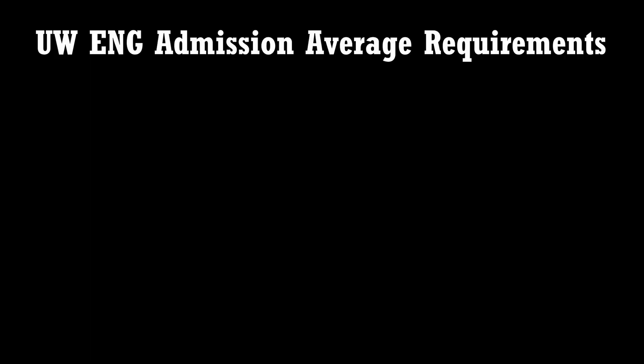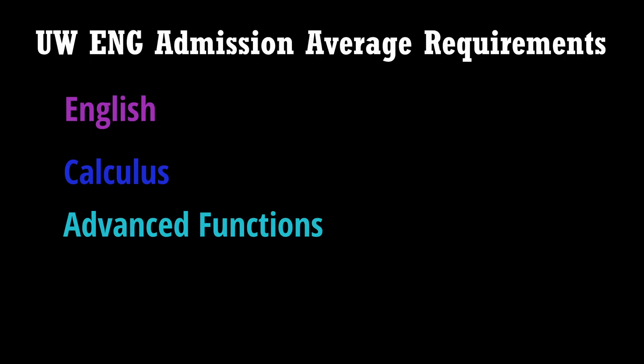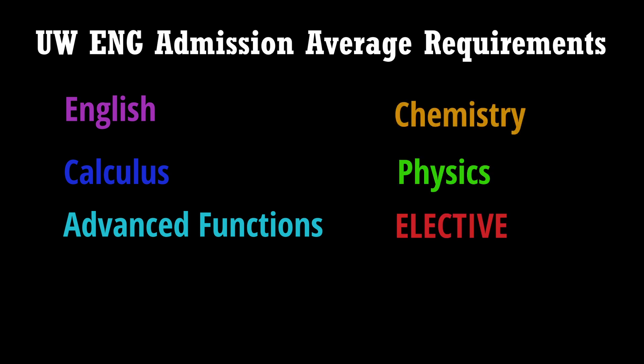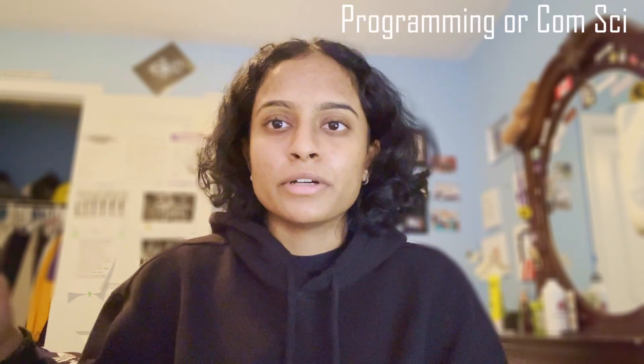Out of your six grade 12 courses, five unfortunately are mandatory, and this is the same across all engineering students. You have grade 12 English, grade 12 calculus, grade 12 advanced functions, grade 12 chemistry, and grade 12 physics. The sixth option is an elective — it's your choice. However, it is recommended for software engineering students to take grade 12 programming or computer science, whatever is offered at your school, since software engineering students do need to have programming experience to apply to the program.